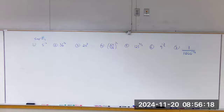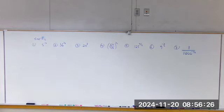Rule number one: when you multiply, you add the exponents — the bases have to be the same. A to the m times a to the n is a to the m plus n. You add the exponents.